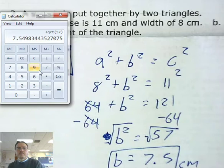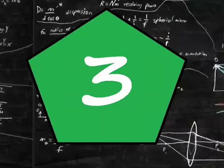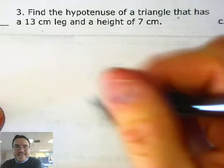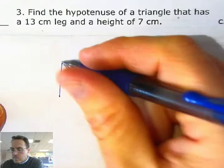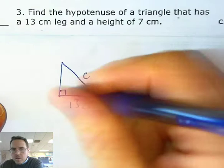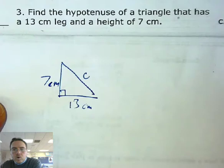The next requested problem is number three: find the hypotenuse of a triangle that has a 13-centimeter leg and a height of 7 centimeters. It's got a triangle; we're finding the hypotenuse which is c, with a 13-centimeter leg and a 7-centimeter height. So: a² + b² = c².